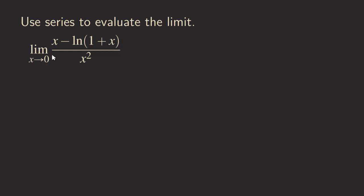As you can see here, if we directly plug in 0 for x, we can see that we get 0 minus ln of 1 plus 0 in the numerator, all over 0 squared. Since ln of 1 is also 0, we get 0 minus 0 on top and 0 on the bottom, so we have an indeterminate form.